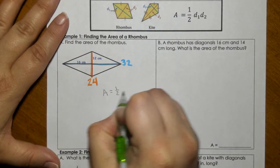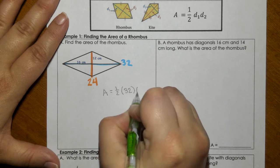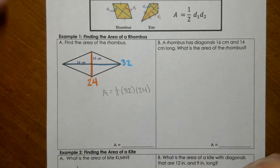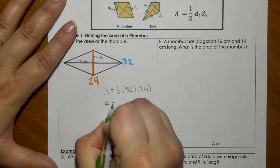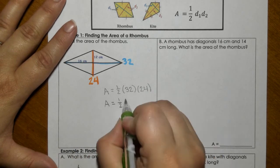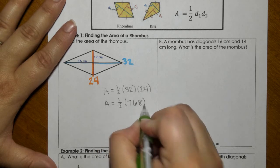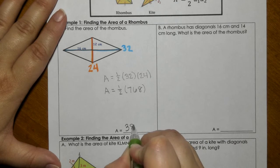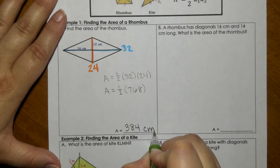So 1 half, again, doesn't really matter which one's diagonal 1, which one's diagonal 2. And I'm going to multiply the whole numbers first. So we're going to get 768. We take half of that, and we get a total of 384 centimeters squared.